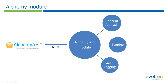The Alchemy module itself is an API that primarily works with the Alchemy service and then provides outputs to three other modules in Drupal. Those modules are the content analysis module, the tagging module, and the auto-tagging module.